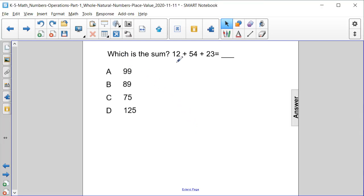Which is the sum of 12 plus 54 plus 23? Is it 99, 89, 75, or 125? Let's add them up to see what we get.